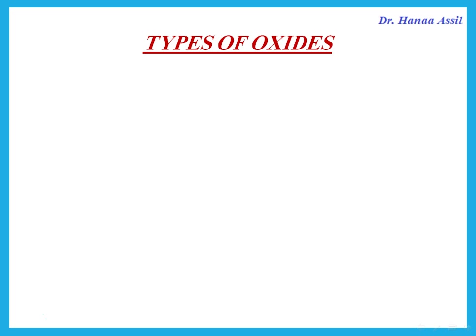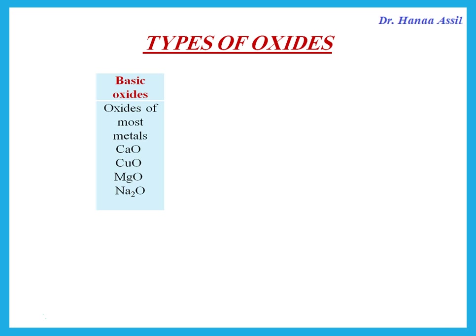But they form different types of oxides. For example, oxides of metals are usually basic oxides. Something that is basic reacts with acid. So oxides of most metals are basic. You should know that calcium oxide, copper oxide, magnesium oxide, sodium oxide — all of these are basic oxides, so they have all the properties of a base.